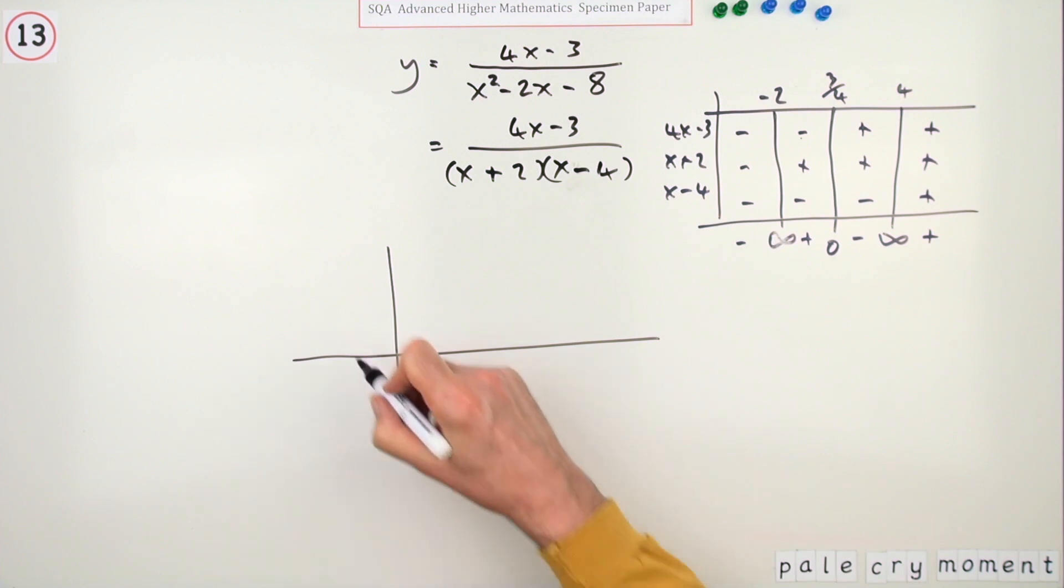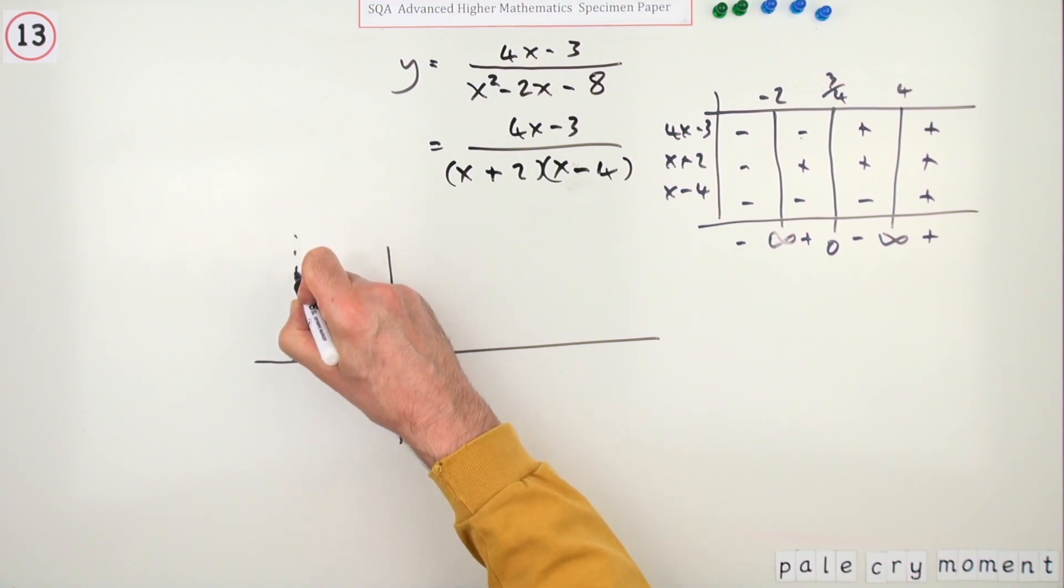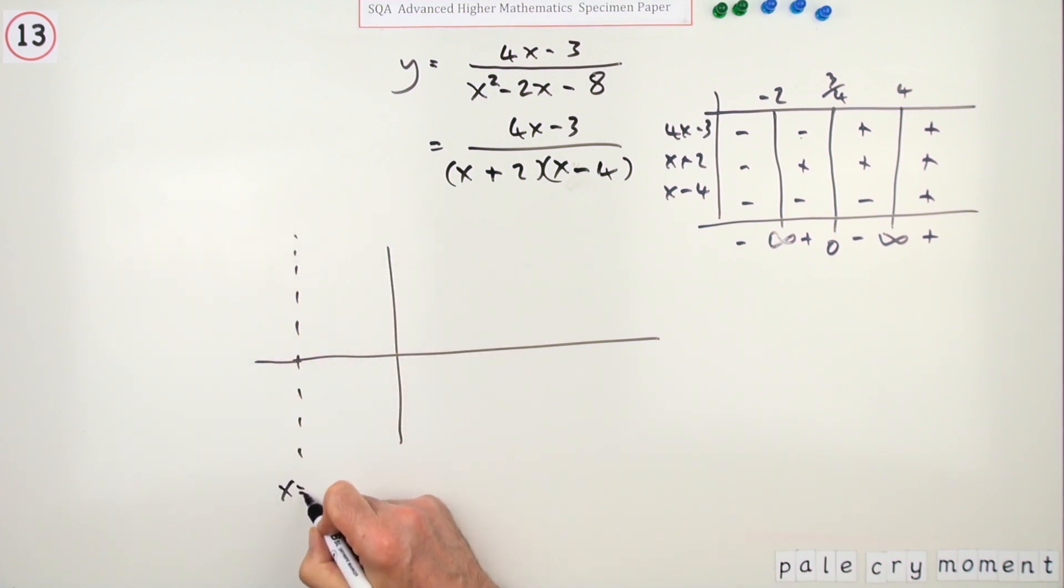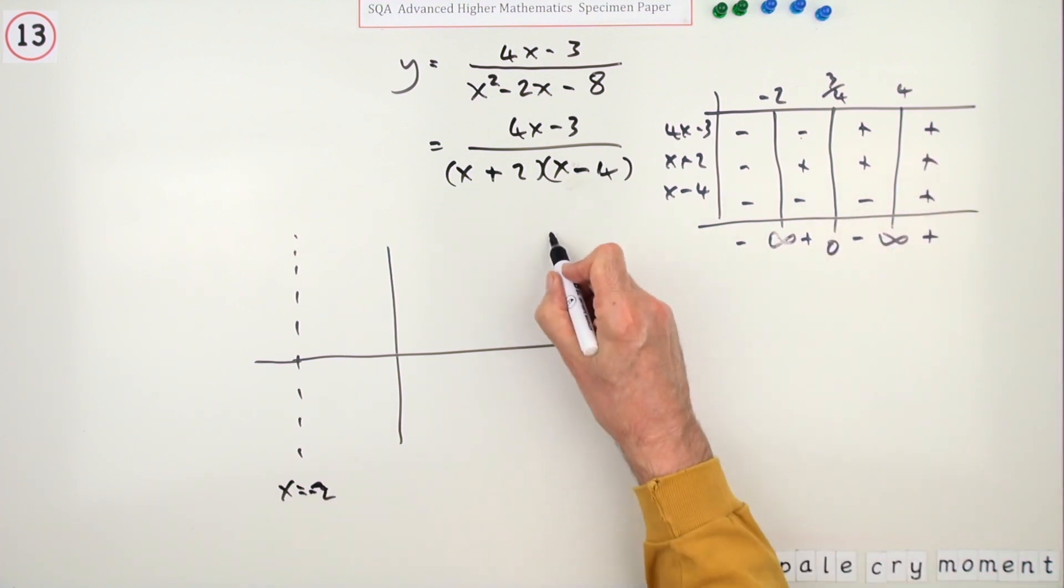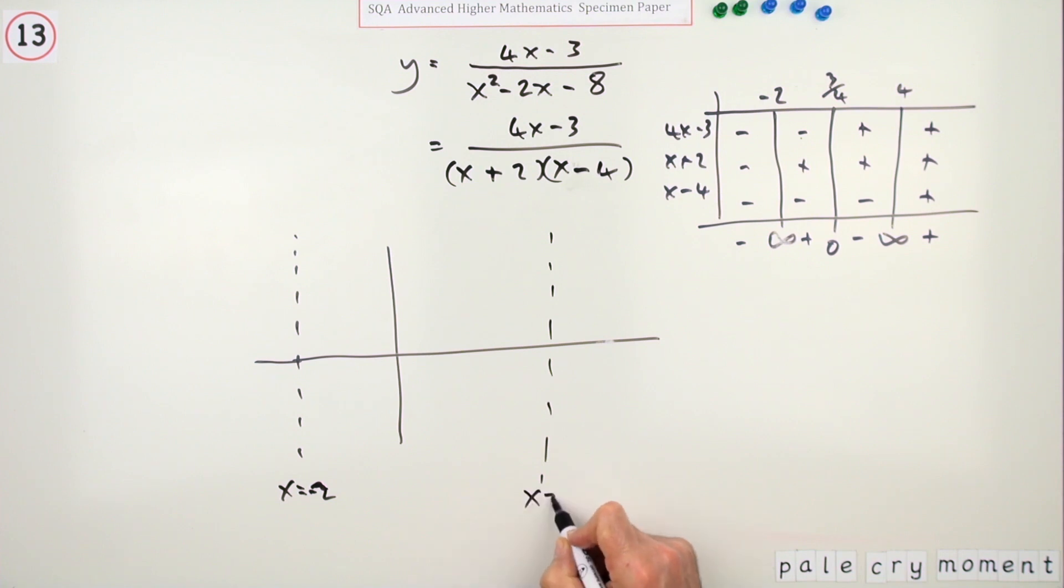But you could draw the graph of this function very quickly just from this. There's a vertical asymptote at negative 2, there's a vertical asymptote at 4, it crosses the x-axis—well, it intersects the x-axis at three quarters.